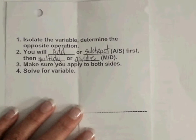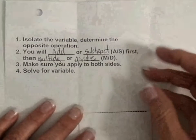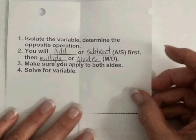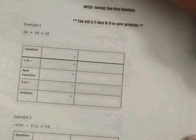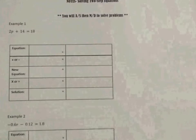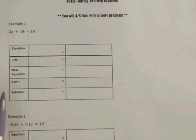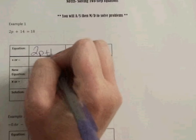So let's do some examples to demonstrate what these steps mean. Our first example is 2p plus 14 equals 18. We have given you boxes for you to solve these in until you get comfortable to where you can remove the boxes and be able to solve the equation and line up your work. The first thing we're going to do is write our equation in the box: 2p plus 14 equals 18.